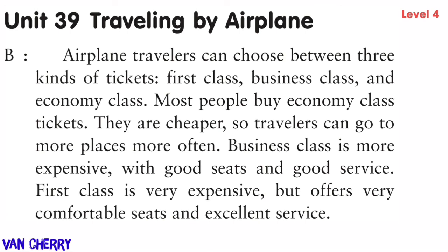Unit 39: Traveling by Airplane. Airplane travelers can choose between three kinds of tickets: first class, business class, and economy class. Most people buy economy class tickets because they are cheaper. Business class is more expensive with good seats and good service. First class is very expensive but offers very comfortable seats and excellent service.